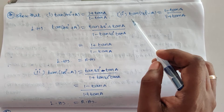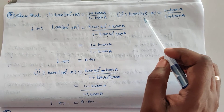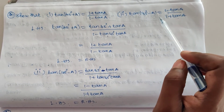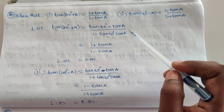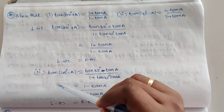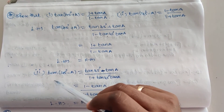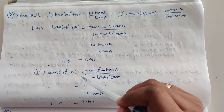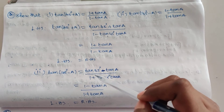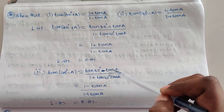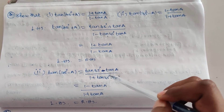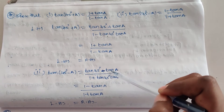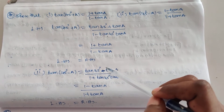Next, I am going to take the second sub-question: tan(45° - a) equals (1 - tan a) / (1 + tan a) — we have to prove that. So I am going to take the LHS: tan(45° - a), which equals tan 45° - tan a, divided by 1 + tan 45° · tan a.